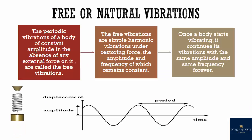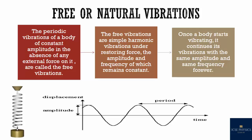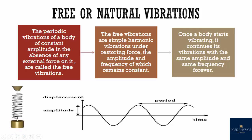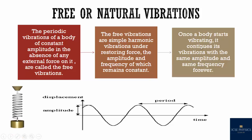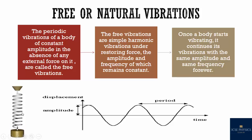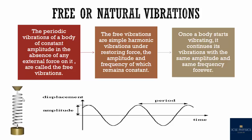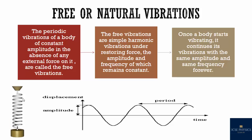What is free or natural vibration? The periodic vibration of a body of constant amplitude in the absence of any external force on it is called free vibration. Free vibrations are simple harmonic vibrations under restoring force — the amplitude and frequency remain constant. Once a body starts vibrating, it continues with the same amplitude and frequency forever. However, this is just a theoretical idea, because in real systems the energy is dissipated to the surroundings over time and the amplitude decreases to zero. This dissipation of energy is called damping.